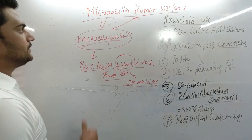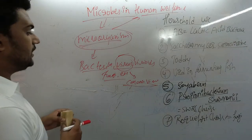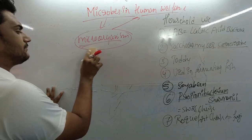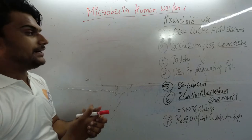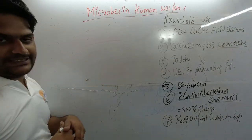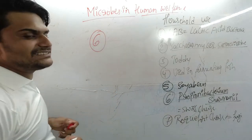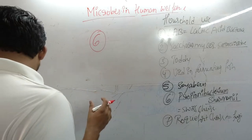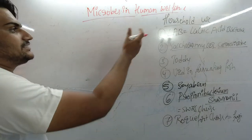We have been using microorganisms for our benefit for a very long time. Even during the Harappa and Mohenjo-daro civilizations, fermentation and alcohol production were practiced - knowingly or unknowingly, bacteria were involved. In this chapter, we will discuss around six categorized uses of microorganisms, covering two uses per video, completing this chapter in three videos.